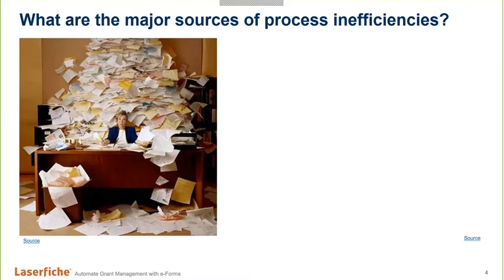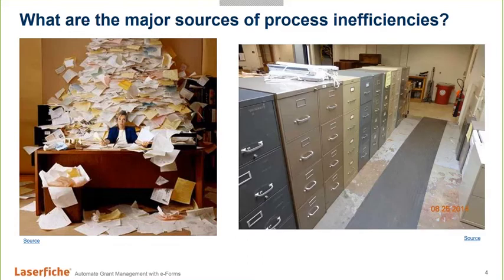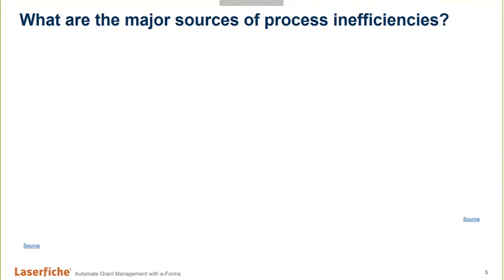Higher ed is notorious for paperwork partly because we're such a highly regulated industry, and partly because many of our institutions have been around for decades — and that's the way we've always done things. It's become a way of life for students, faculty, and staff. There's a form for pretty much everything, from requesting facilities maintenance to applying for a grant to class registration. And the abundance of paper as a source of inefficiency goes hand-in-hand — the pun is intended — with our second challenge: manual processes.